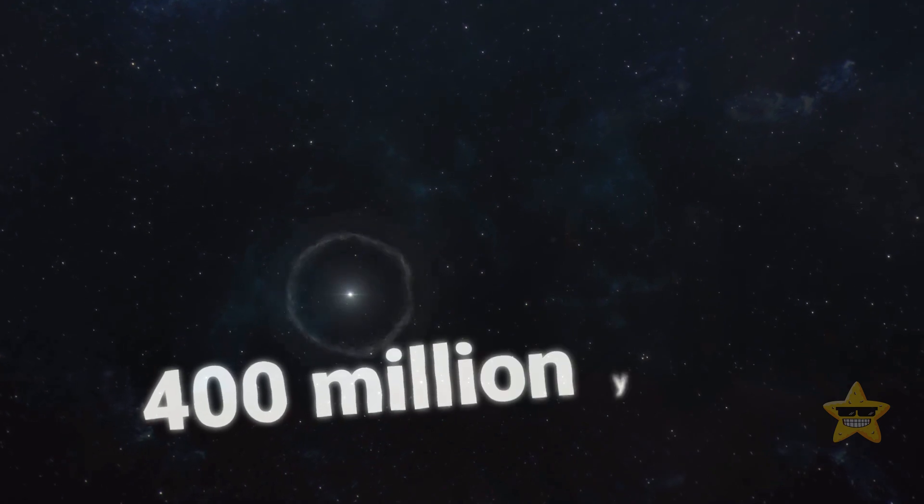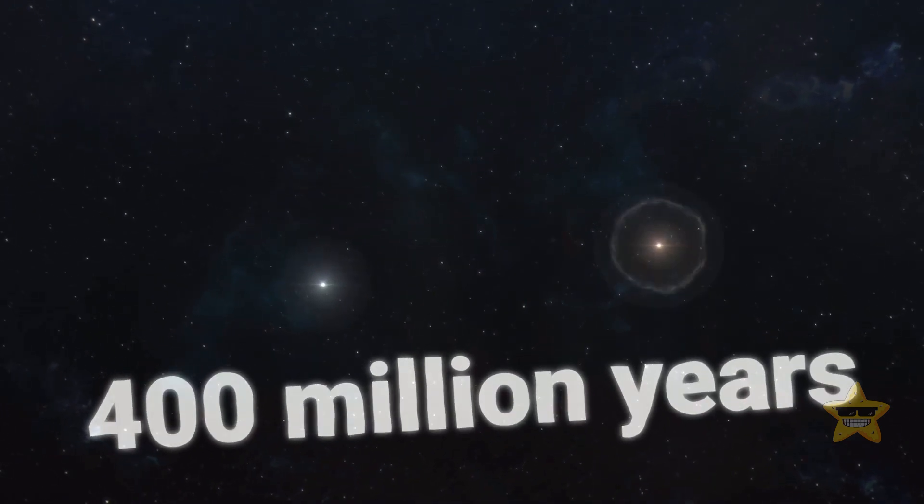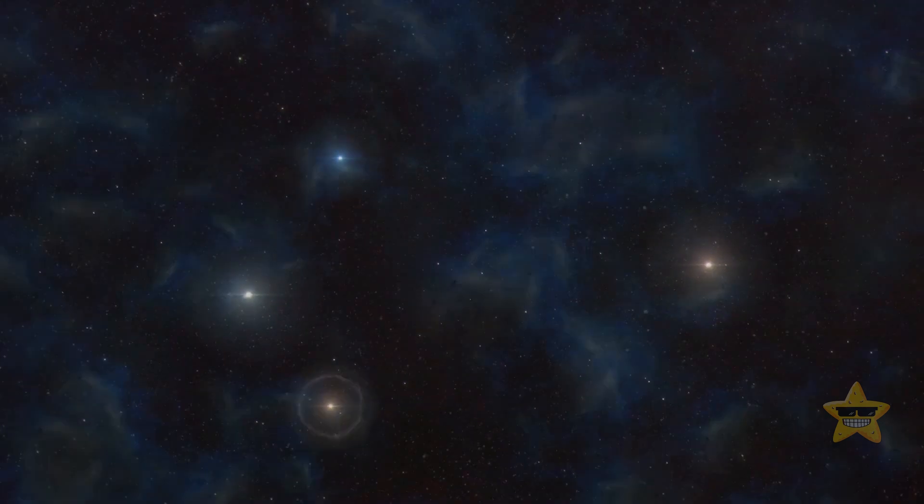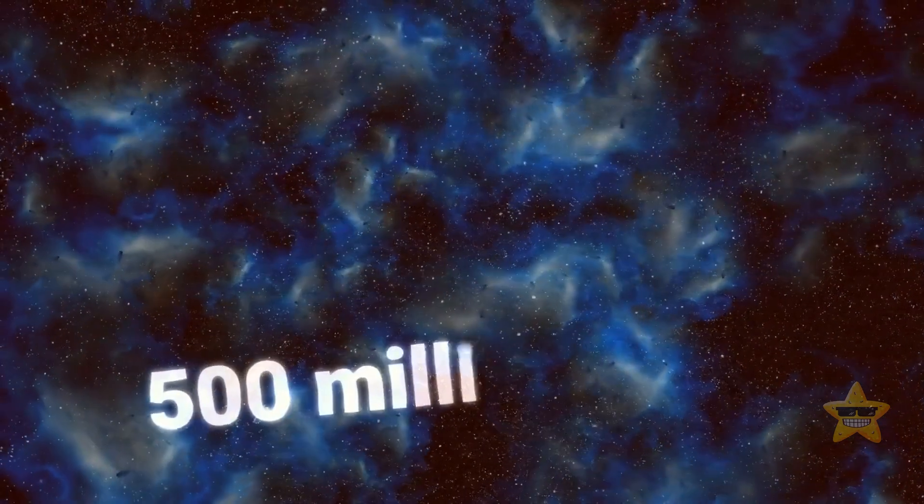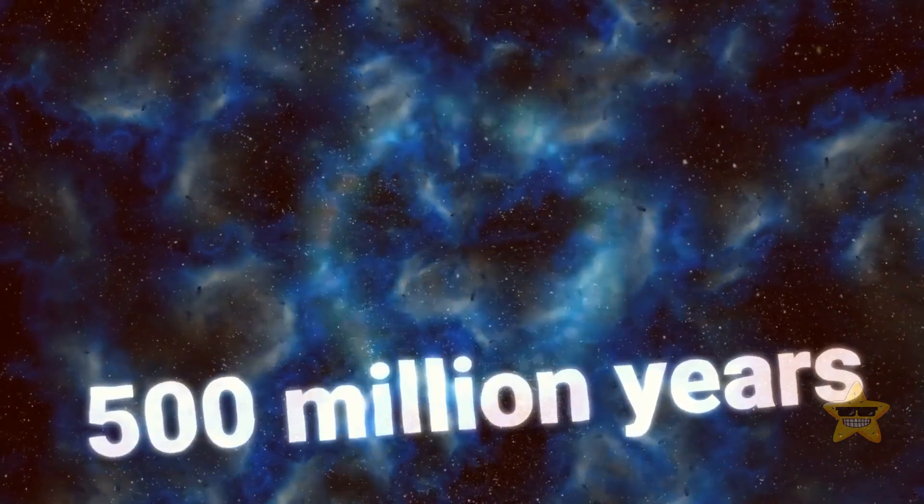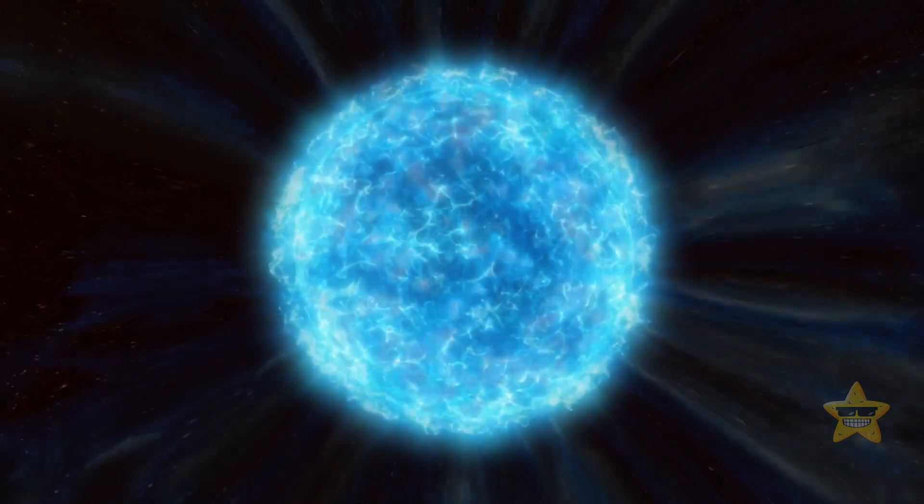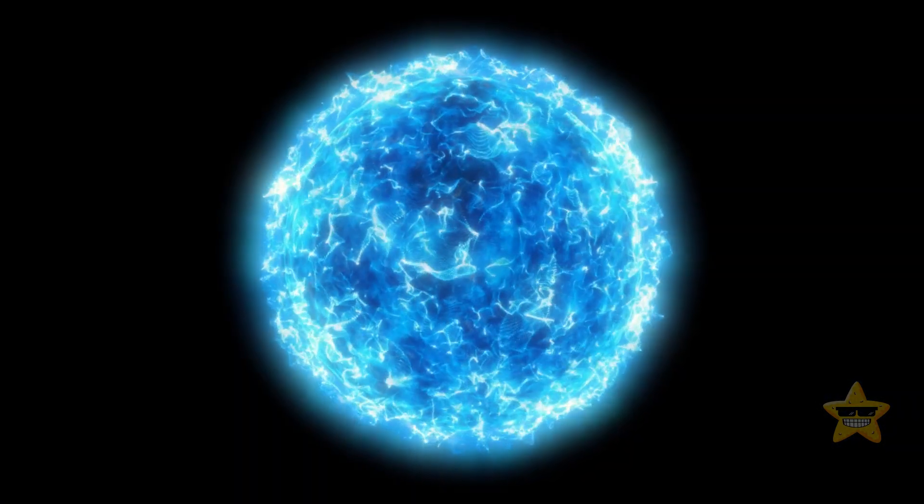About 400 million years after the Big Bang, the cosmos slowly started coming out of its dark ages. This period probably lasted over half a billion years. Clumps of gas came together and formed something beautiful: the very first stars and galaxies.